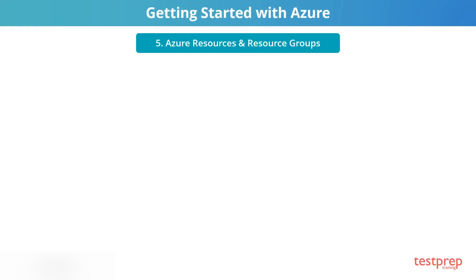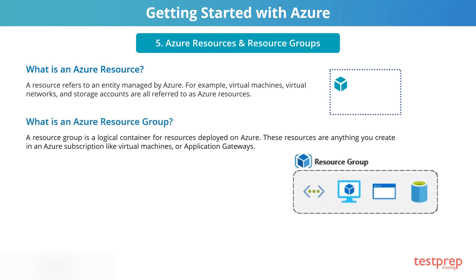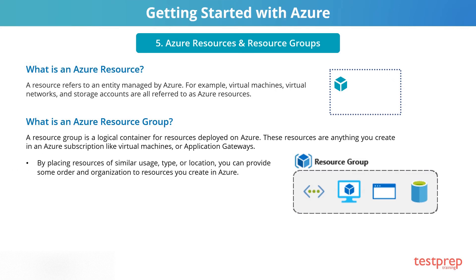Next, let's learn what Azure resources and resource groups are. A resource refers to an entity managed by Azure — for example, virtual machines, virtual networks, and storage accounts are all referred to as Azure resources. A resource group is a logical container for resources deployed on Azure, including anything you create in an Azure subscription like virtual machines or application gateways. By placing resources of similar usage, type, or location, you can provide order and organization to resources you create in Azure. If you delete a resource group, all resources contained within are also deleted.